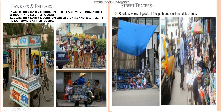Now let's learn in detail about itinerant or mobile traders. Under this we have hawkers and peddlers, street traders, and market sellers. Hawkers carry goods on their heads, move from door to door, and sell their goods. They generally sell one or two types of goods — for example, vegetables, fruits, flowers, etc. Peddlers carry goods on wheeled carts and sell them to consumers at their doors; they generally sell more than one type of goods.